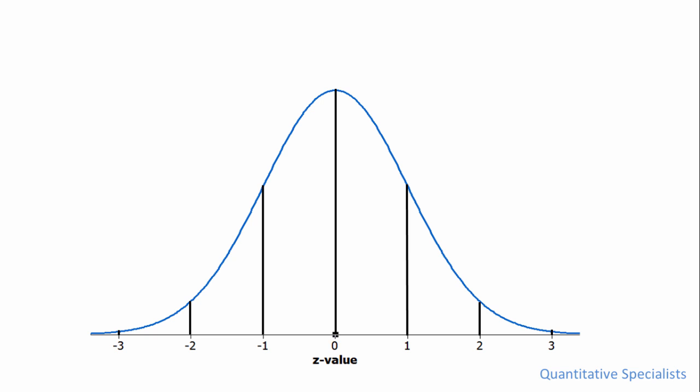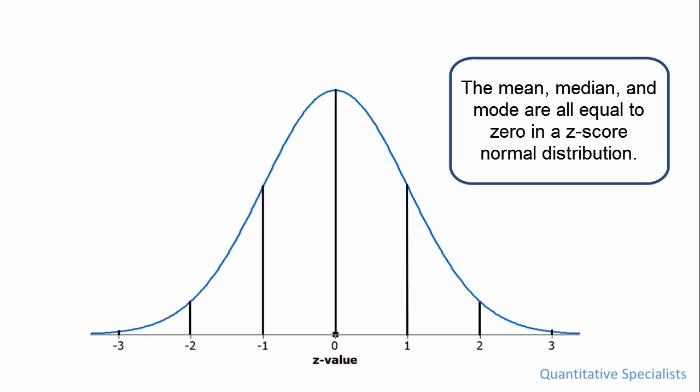In a normal distribution, the center is always zero when it's in z-score form, and it's also equal to the mean as well as the median and the mode. So the mean, median, and mode are all equal to each other and they happen to be a z of zero in a normal distribution.